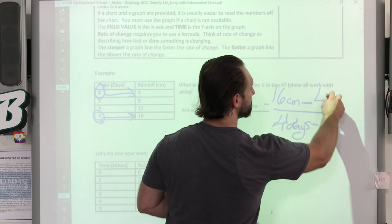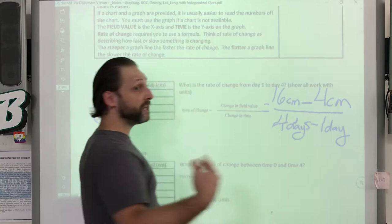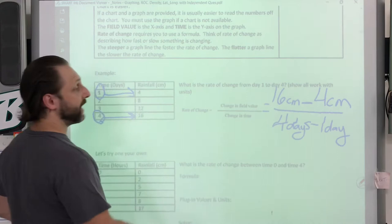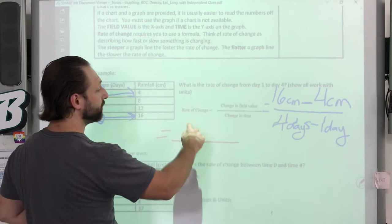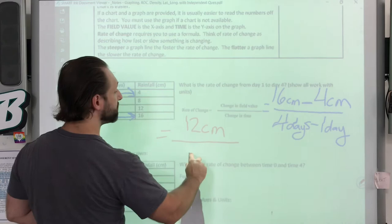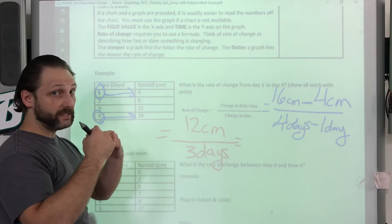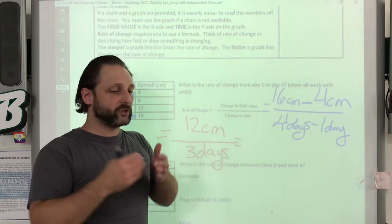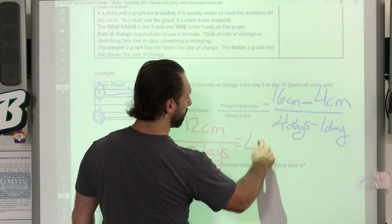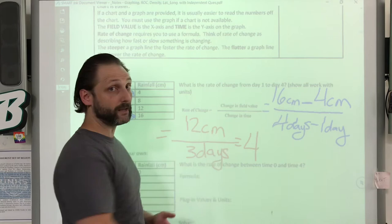We can't leave it like this. We have to simplify. I'm going to change up the colors so it doesn't get too blue. And when we reduce the top, we end up having 16 minus 4, 12 centimeters. We have four days minus one day, which gives us three days. And if we simplify more because we cannot leave it in fraction form, I like decimals. It's science. I want extreme accuracy. We divide these and we end up with four.